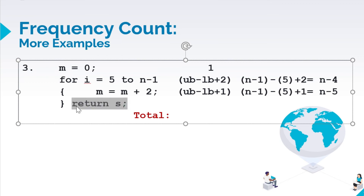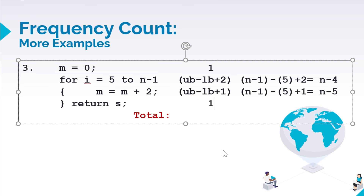And lastly, we have this return s. For return s, that is a simple statement because it is declared outside the loop. So that is counted as 1. So if we get the total frequency count, we have 2n. Then the constants: 1 minus 4 is negative 3, minus 5 is negative 8, plus 1 is negative 7. So total is 2n minus 7.